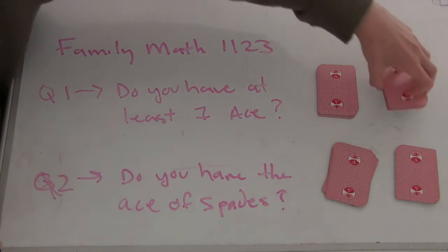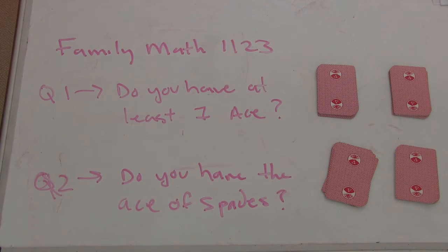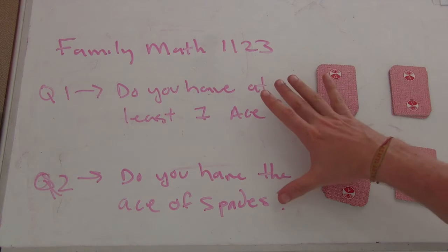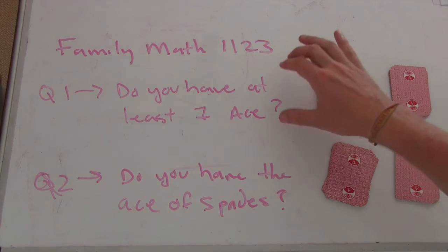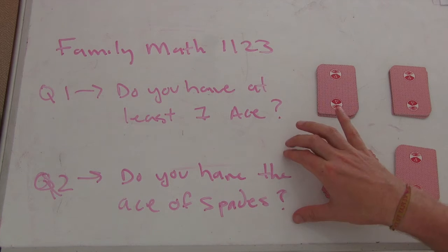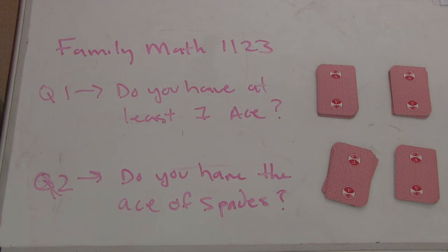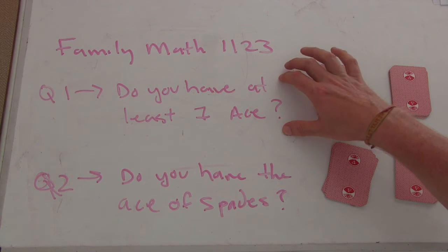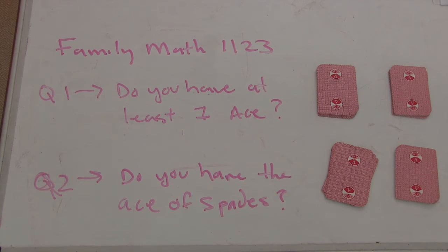And so the question here is, there's a follow-up. It's the same follow-up to both of these questions. Do you have at least one ace? Do you have the ace of spades? The follow-up is, do you have more than one ace? So which person answering yes to these questions do you think has a higher chance of having more than one ace? The person who answers yes to I have at least one ace, or the person who answers yes to I have the ace of spades?